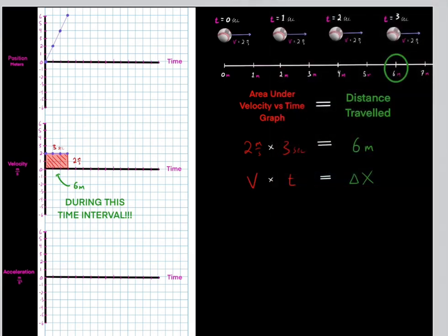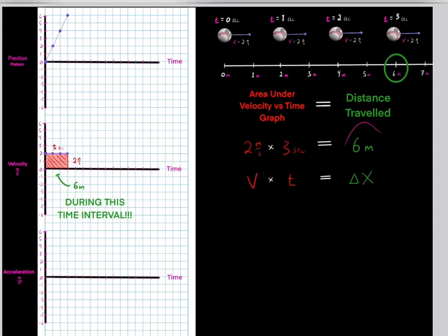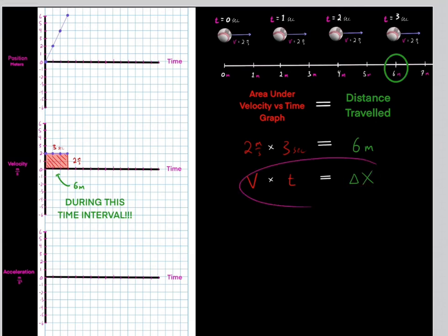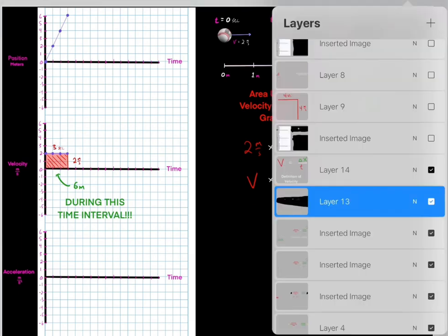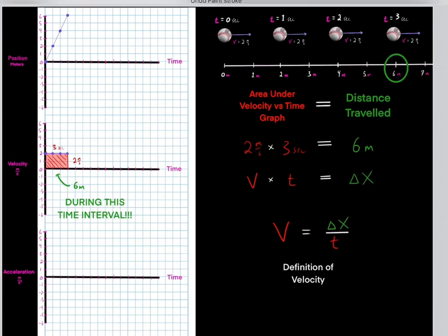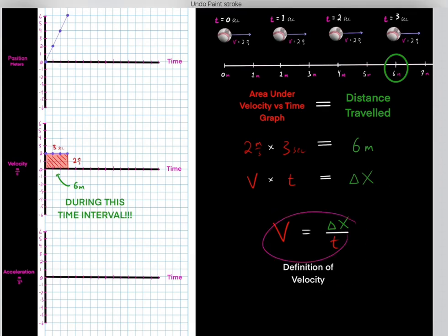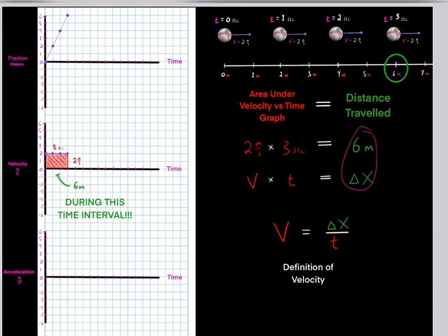We can prove this because what we're doing is taking the velocity and multiplying it by time to get the distance traveled — the delta x. If we rearrange and divide both sides by time, we get the definition of velocity: velocity equals delta x divided by t. So it makes sense that if you take the velocity and multiply it by the time, you get the distance traveled — just in the form of a graph.